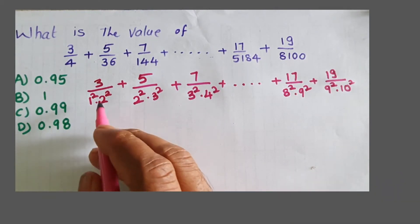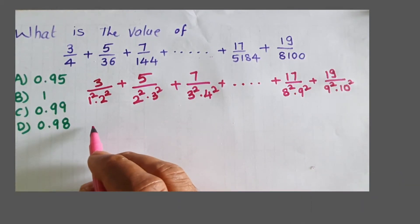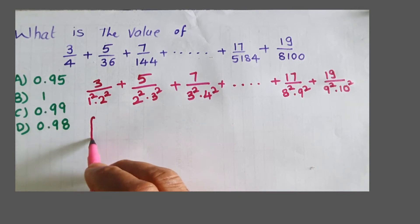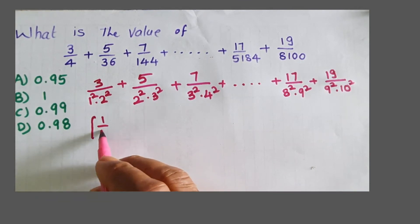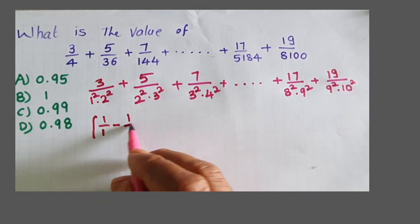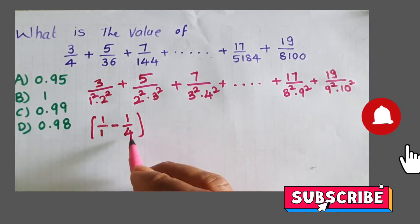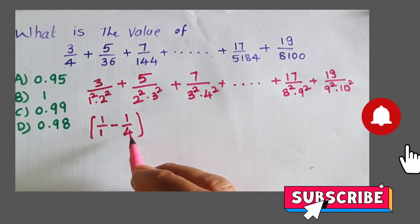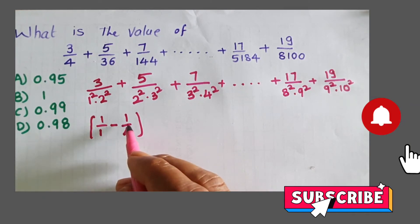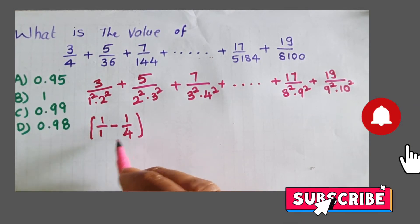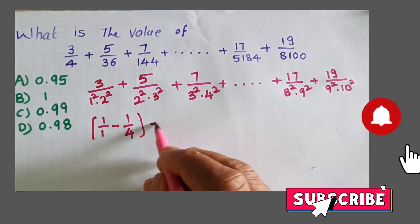I write 1 by 1 minus 1 by 4. I write 4 times 2 squared, but 4 is 4 and 1 is 1, so 4 minus 1 is 3, denominator is 4.